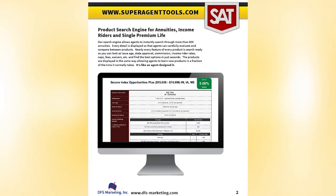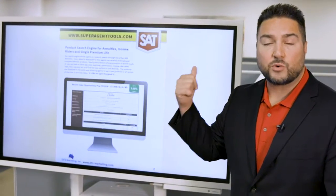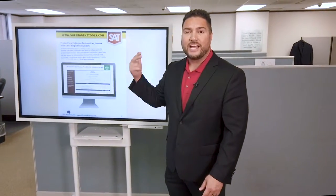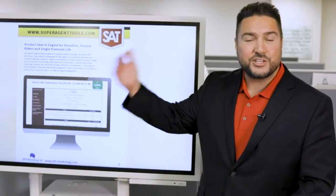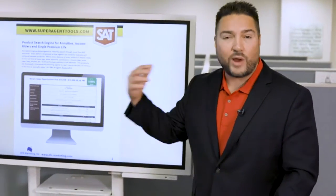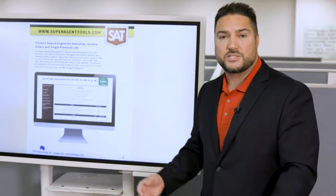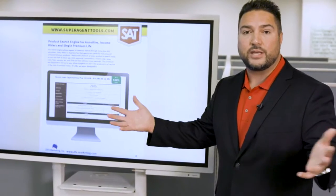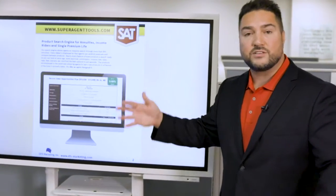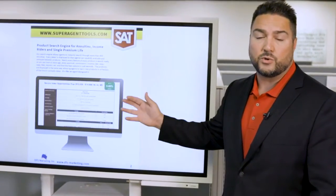With the Super Agent Tool System, our online search engine allows agents to instantly search through more than 600 different annuity products. It'll allow you to go through cap rates, surrender charges, commissions, income riders, nursing home waivers, terminal illnesses, issue ages, liquidity, crediting methods, state specific. Pretty much every product that's created on the index annuity and fixed annuity from all the different carriers is available through the Super Agent Tool System.